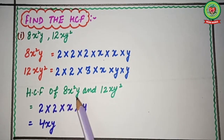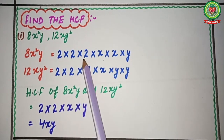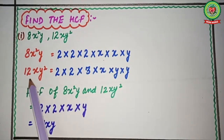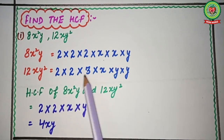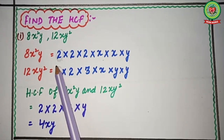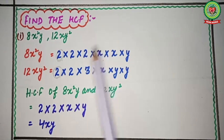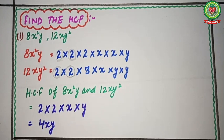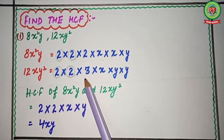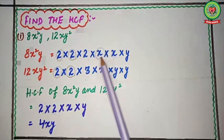Now we have to find the HCF of 8x²y and 12xy². We look at which factors are common in both. The factors of 8 are 2, 2, 2, and the factors of 12 are 2 × 2 × 3. We can see that 2 and 2 are common in both, so we write 2 once, then multiply by another 2. The remaining 2 and the 3 are not common to both, so we leave them.